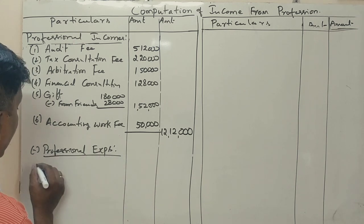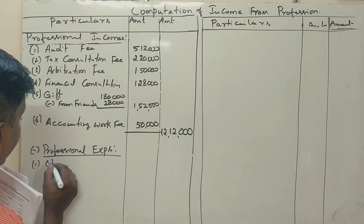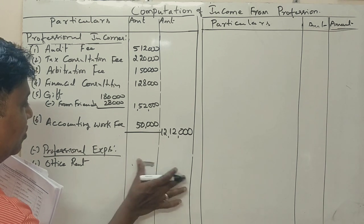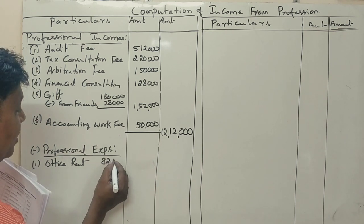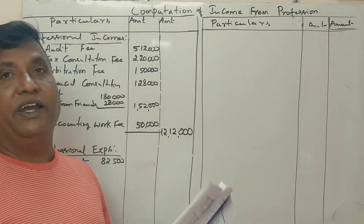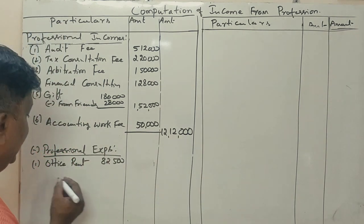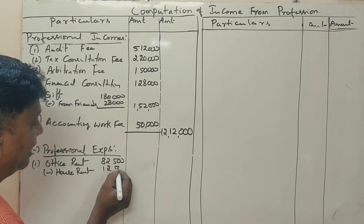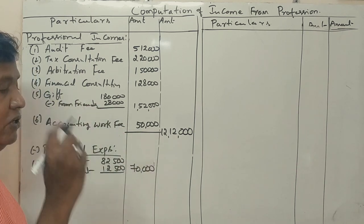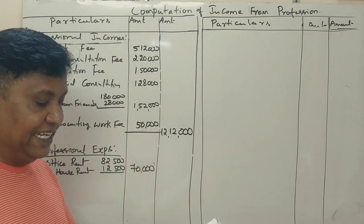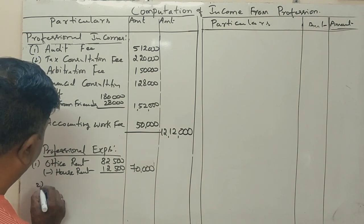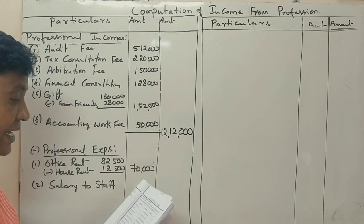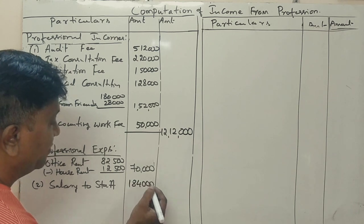Professional expenses: Office rent — after adjustment, 82,500. However, 12,500 rupees is rent paid for a residential house, which is a personal expense, so we deduct 12,500. Net office rent allowable: 70,000 rupees. Salary to staff: 1,08,000.